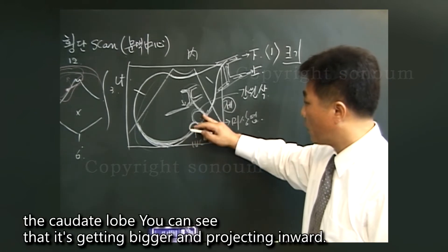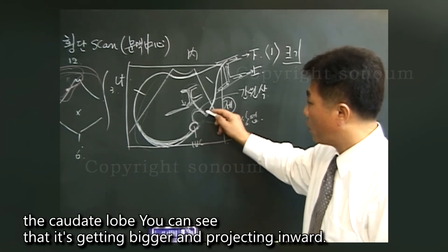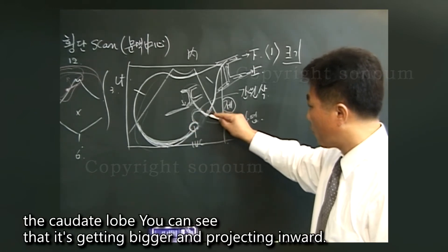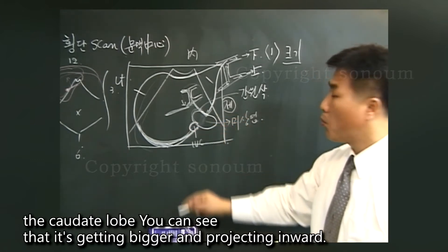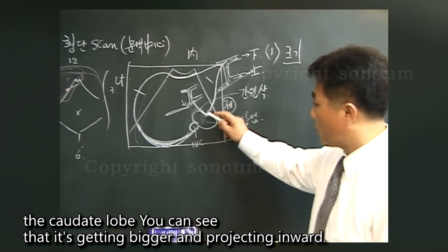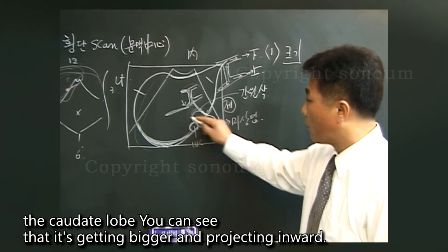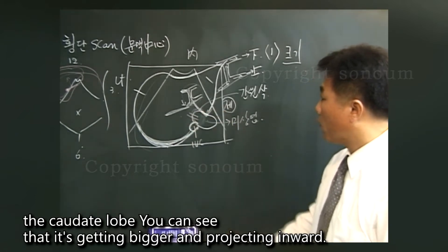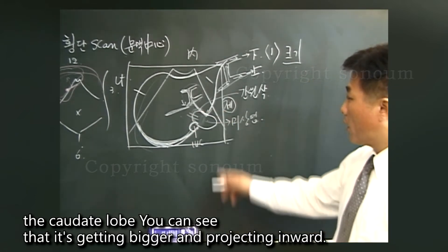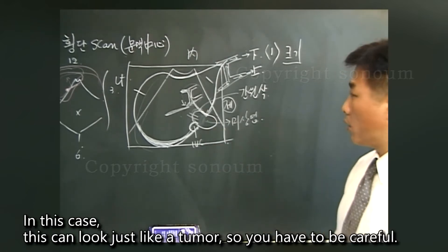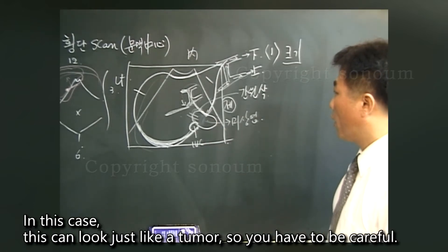But if it's cirrhosis, the caudate lobe, you can see that it's getting bigger and projecting inward. In this case, this can look just like a tumor. So you have to be careful.